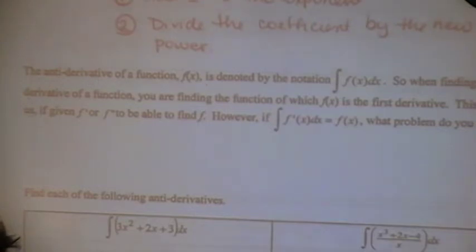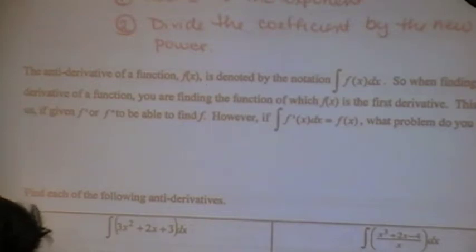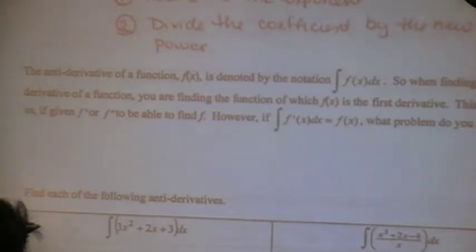When we find the anti-derivative of a function, you are finding the function of which F of X is the first derivative — so it is taking you backwards. If you are given the derivative or the second derivative, it's going to enable you to get all the way back to the original function. It's called the anti-derivative. So if they gave us acceleration, we could get all the way back to the position vector, because we now have the anti-derivative — we can go backwards.